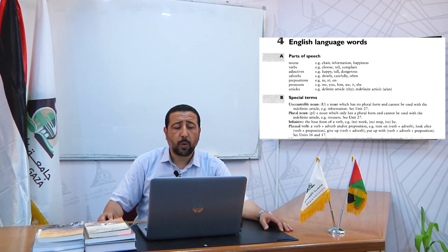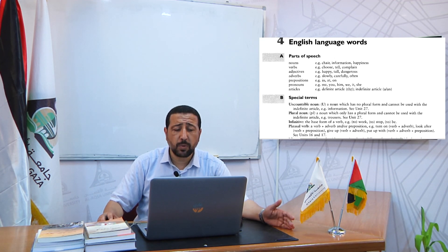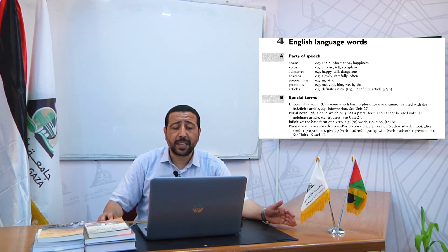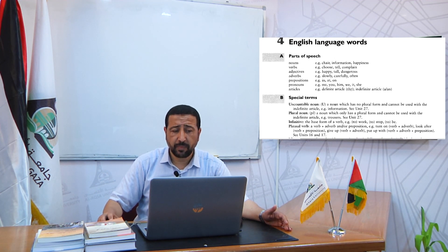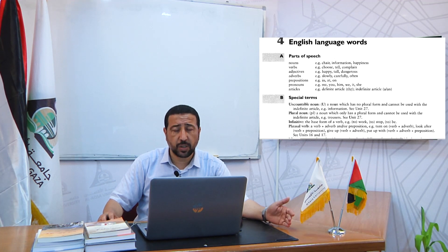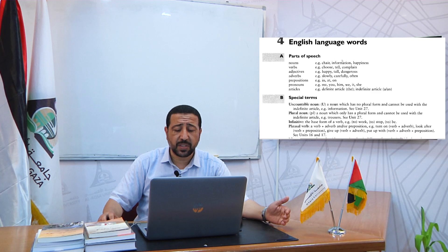We have prepositions — in, at, on. We have pronouns — me, you, him, we, it, and the like. And last but not least, we have articles, like the definite article 'the', and the indefinite articles 'a' and 'an'. So these are the components or the parts of speech of the English language — the different classes into which the language is divided.